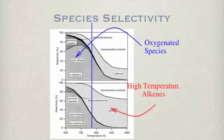This slide shows that there is significant different species selectivity at lower temperatures as opposed to higher temperatures. At low temperatures, oxygenated species such as ketones, aldehydes, peroxides, and cyclic ethers are predominant.